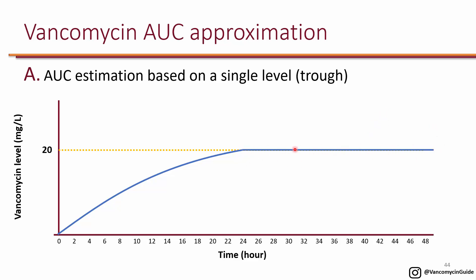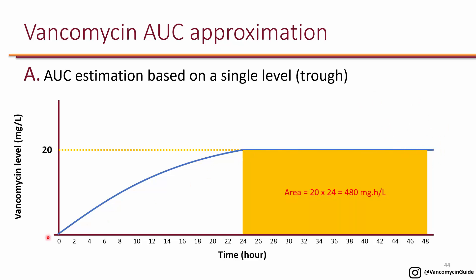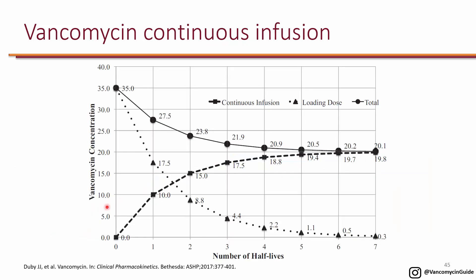If you get a level of 20 on continuous infusion, you're no longer estimating the AUC — the AUC is exactly 20 times 24, which is 480, because there are no peaks and troughs. However, the problem with continuous infusion is that during the first 24 hours, it takes a very long time to reach steady state, so you are under-dosing for the first 24 hours. This can be fixed by giving a loading dose.